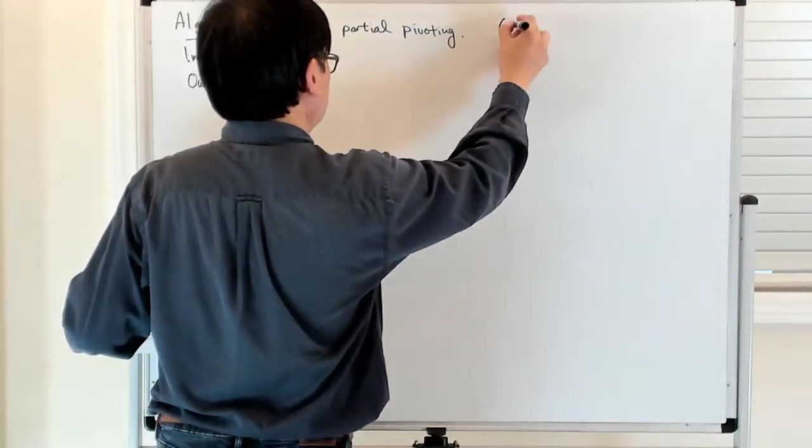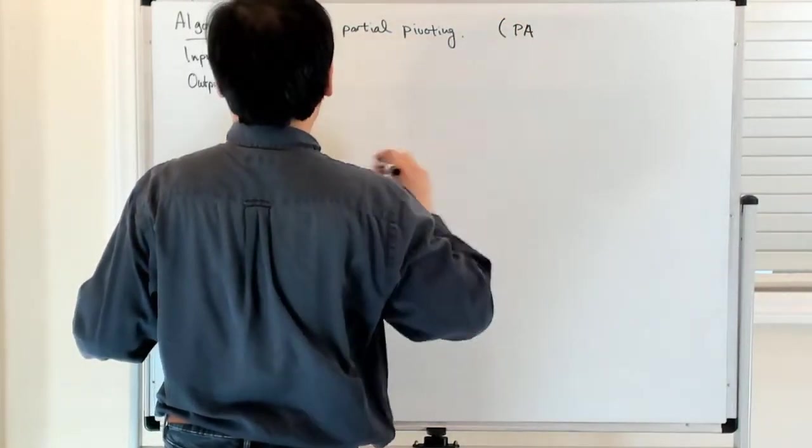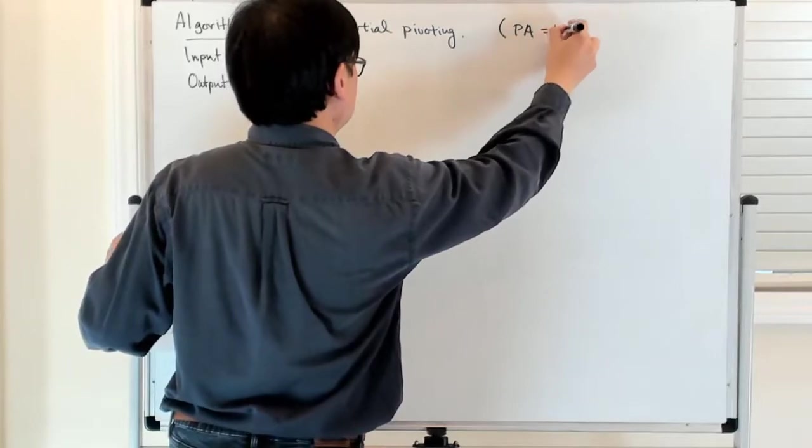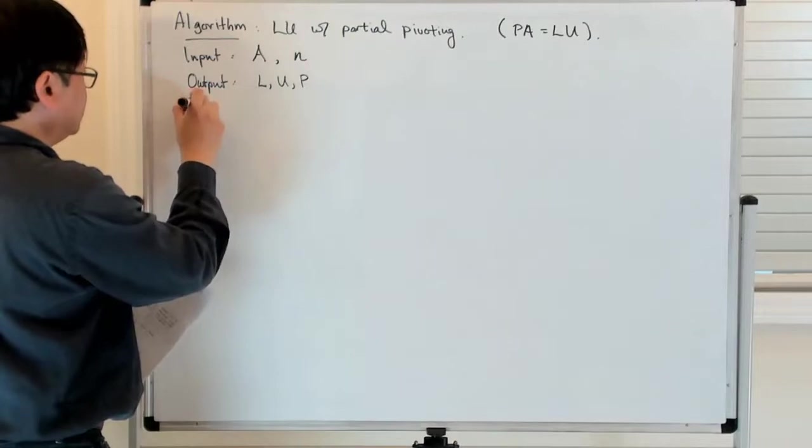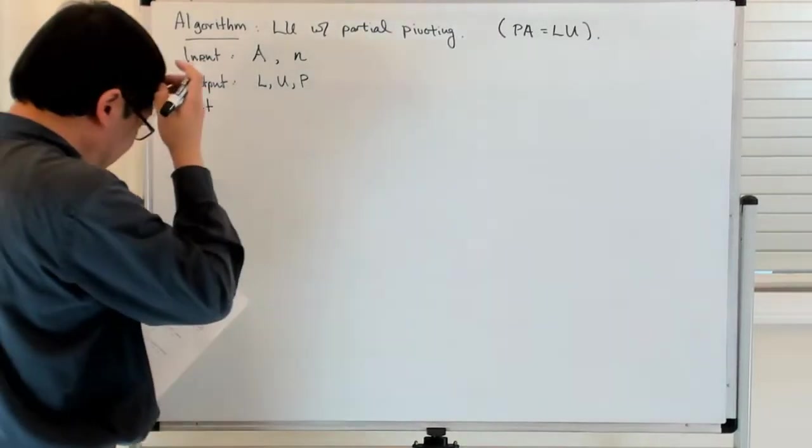The output is L, U, and P. Again, at the back of your mind, what you want to do is find L, U, and P such that P times A is equal to L times U. So you start with setting up the thing.